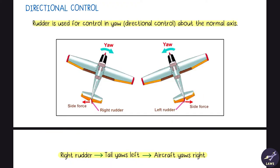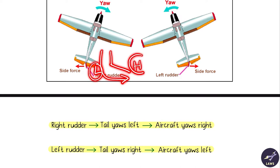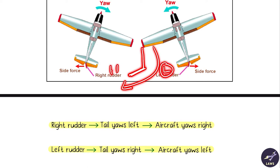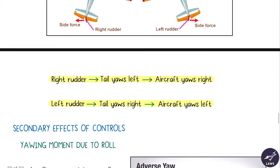Next, we have directional control. The rudder is used for control about the normal axis. If the rudder is turned to the right, airflow accelerates on the right side of the fin, creating low pressure there and high pressure on the left, so the tail moves left and the aircraft yaws right. Similarly, applying left rudder causes the tail to move right and the aircraft yaws left.